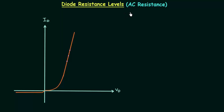In the last lecture we completed DC resistance of PN junction diode. In this lecture we will learn AC resistance. This is the VI characteristics of the diode and we will use this characteristics to calculate the AC resistance.